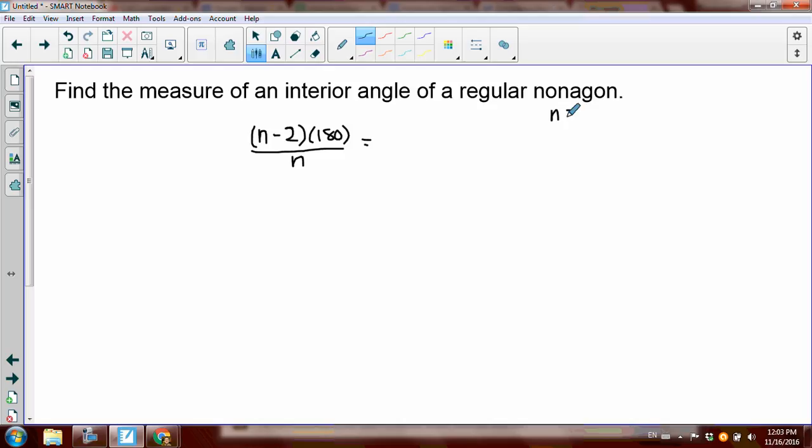So a nonagon at n equals 9. So this is 7 times 180, divided by 9. So the 180 divided by 9 would be 20 times 7 would equal 140.